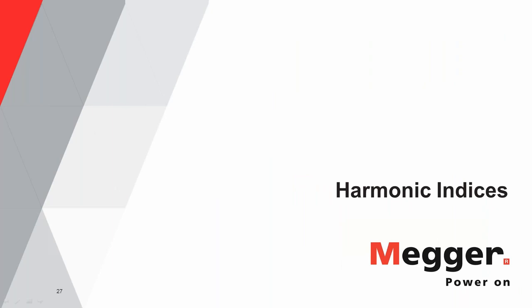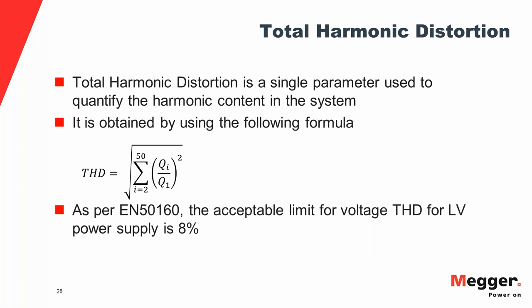The next section covers harmonic indices. THD — total harmonic distortion — is a single parameter used to quantify the presence of harmonics. It is calculated using the ratio of individual harmonic components to the fundamental. Per European standard EN 50160, the acceptable limit for voltage THD is 8%.